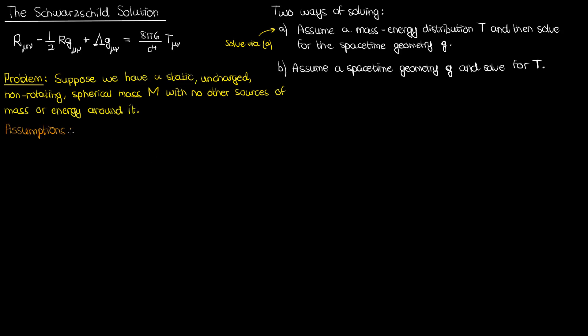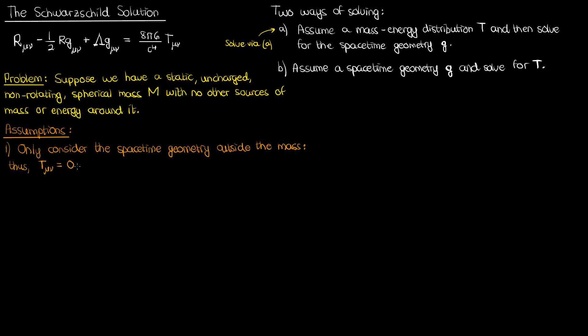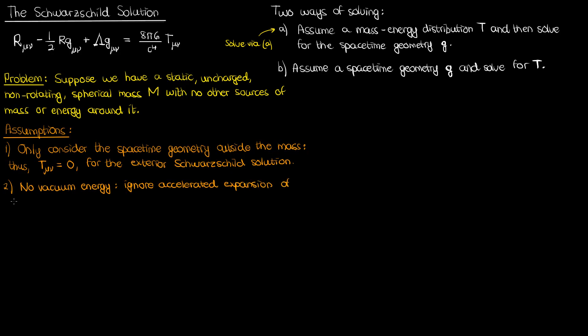Let me state the assumptions explicitly. The first assumption is that we're only worried about the spacetime geometry outside the spherical mass — in the surrounding vacuum. In that surrounding vacuum there is no mass or energy, meaning the stress-energy-momentum tensor is zero. Inside the mass there's mass and pressure so the stress-energy tensor won't be zero, but outside the mass it will be zero. This means we're going for the exterior Schwarzschild solution. The second assumption is that there's no vacuum energy — we ignore the accelerated expansion of the universe and set our cosmological constant to zero. The cosmological constant describes vacuum energy and is closely related to dark energy, so we set it to zero here.